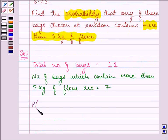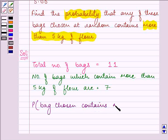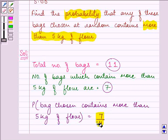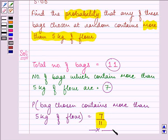So the required probability, the probability that the bag chosen contains more than 5 kg of flour, is equal to 7 out of 11. This is our required answer to this session. Hope you enjoyed and have a good day.